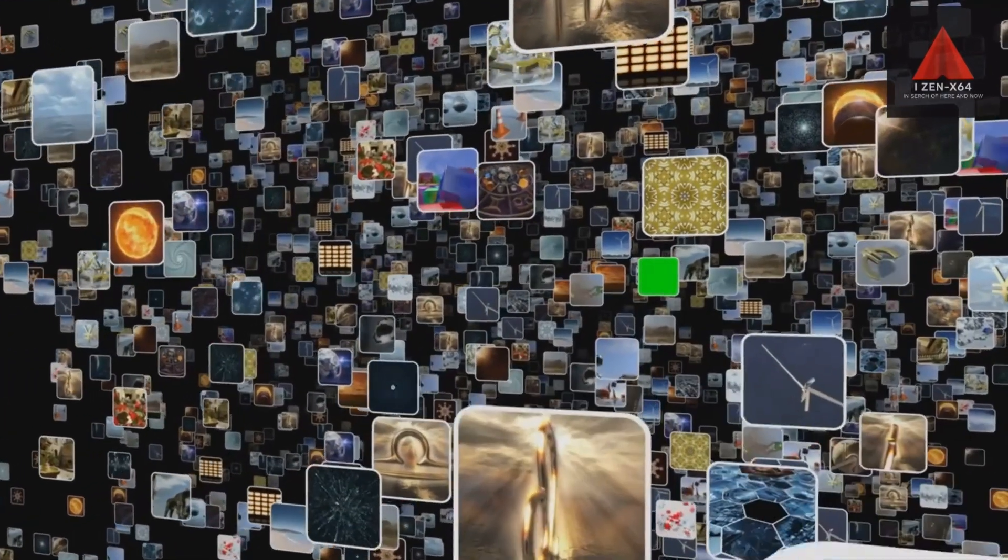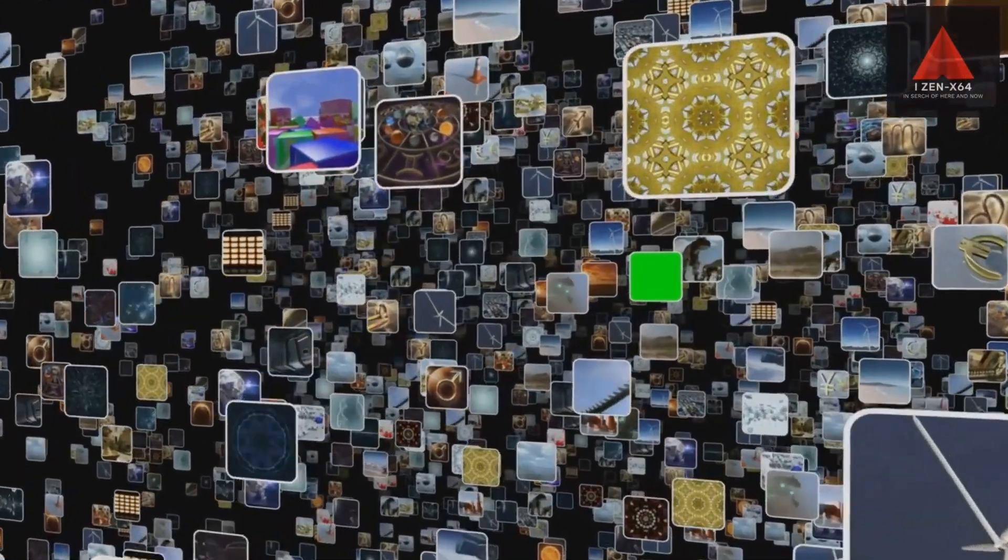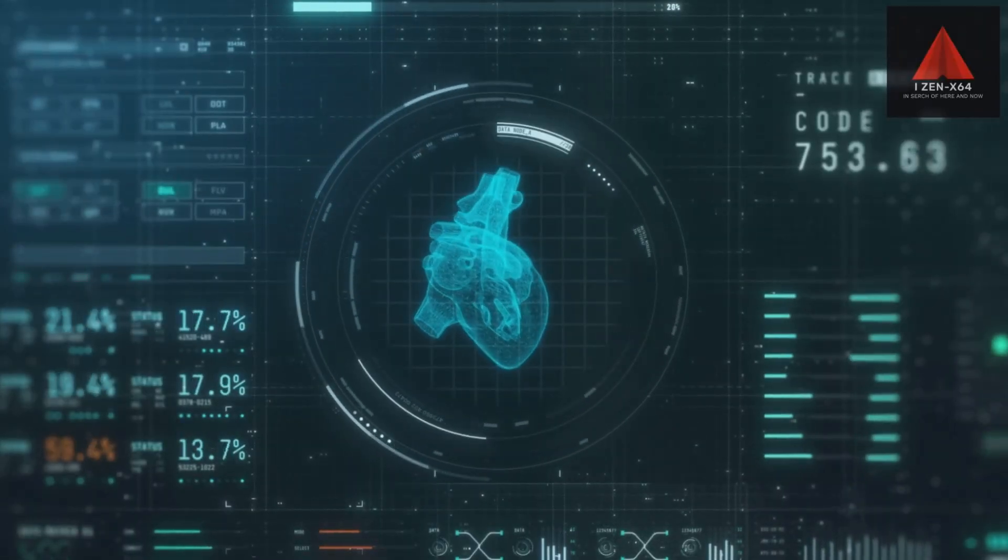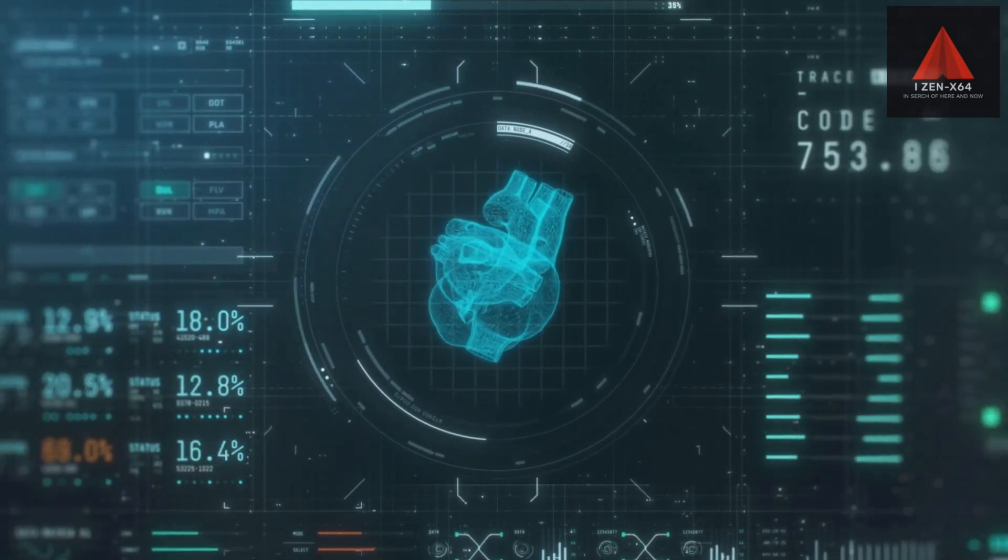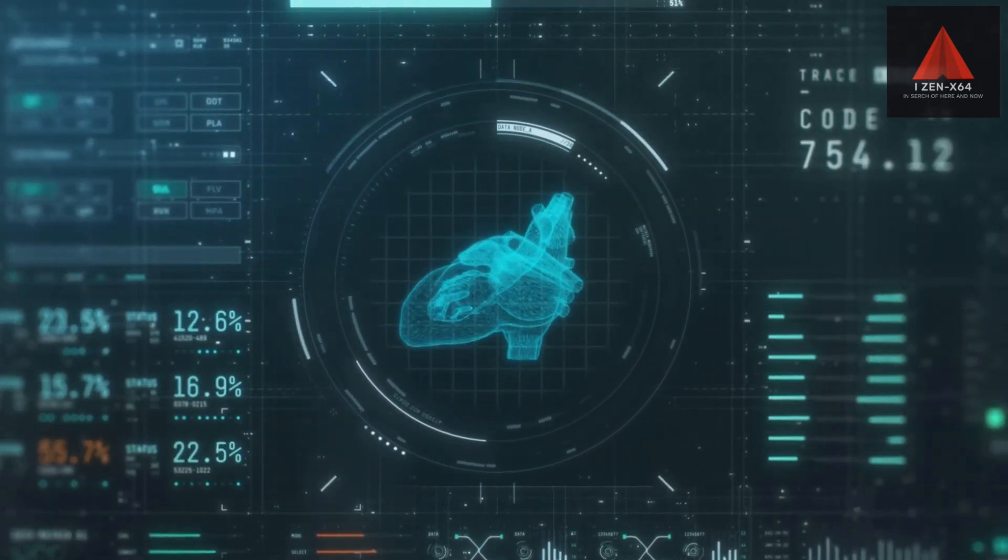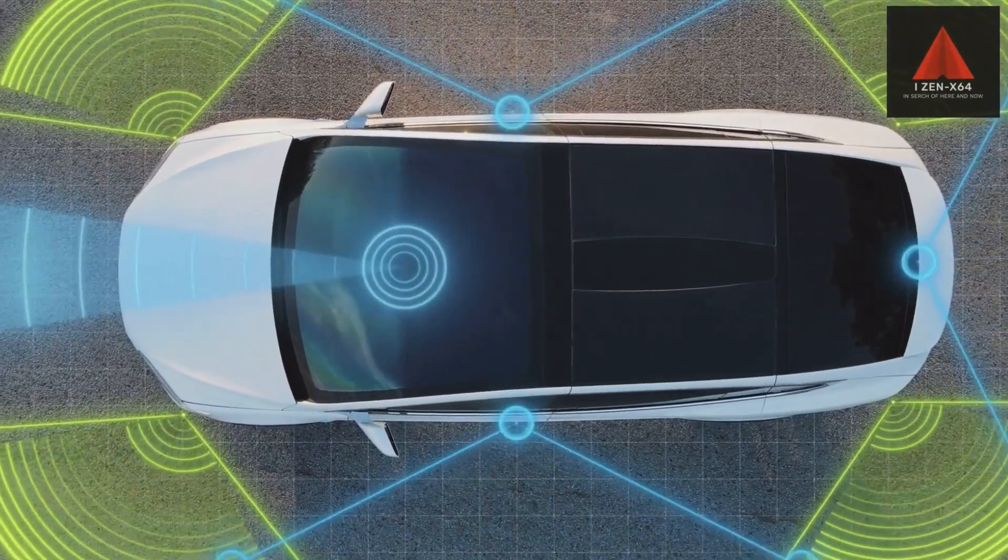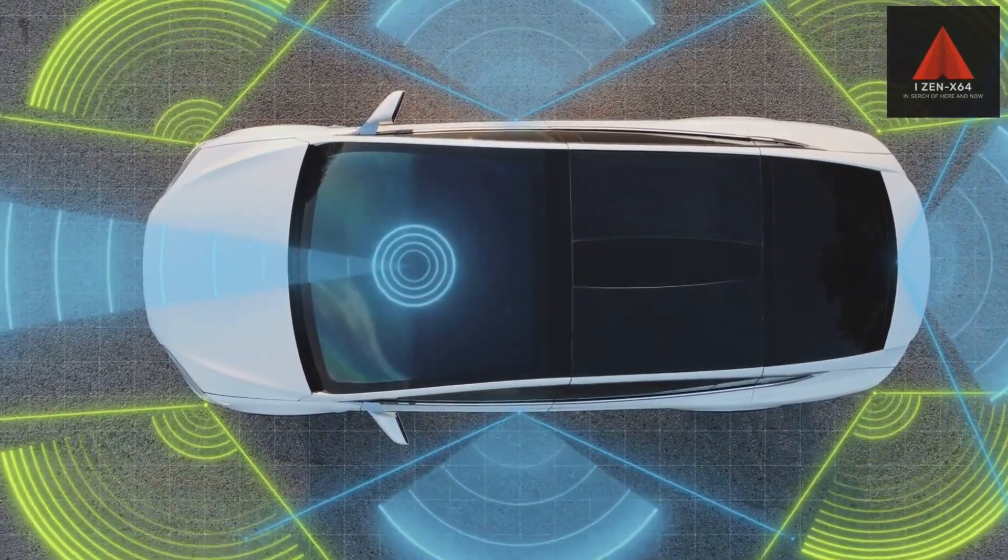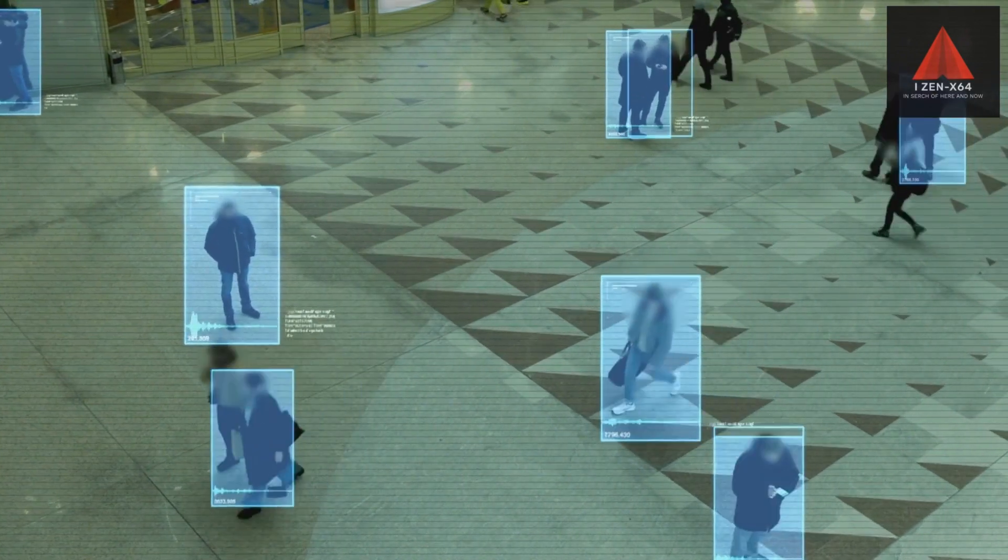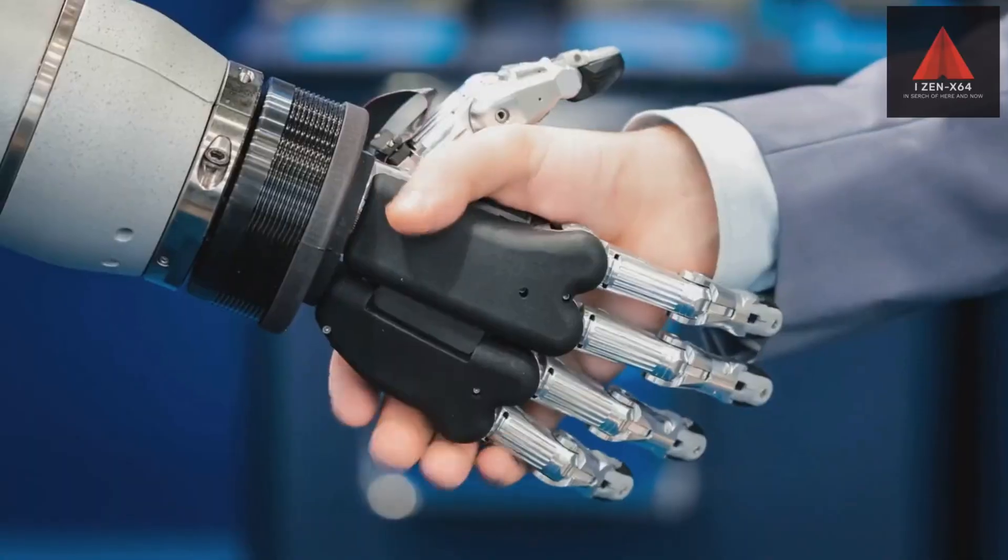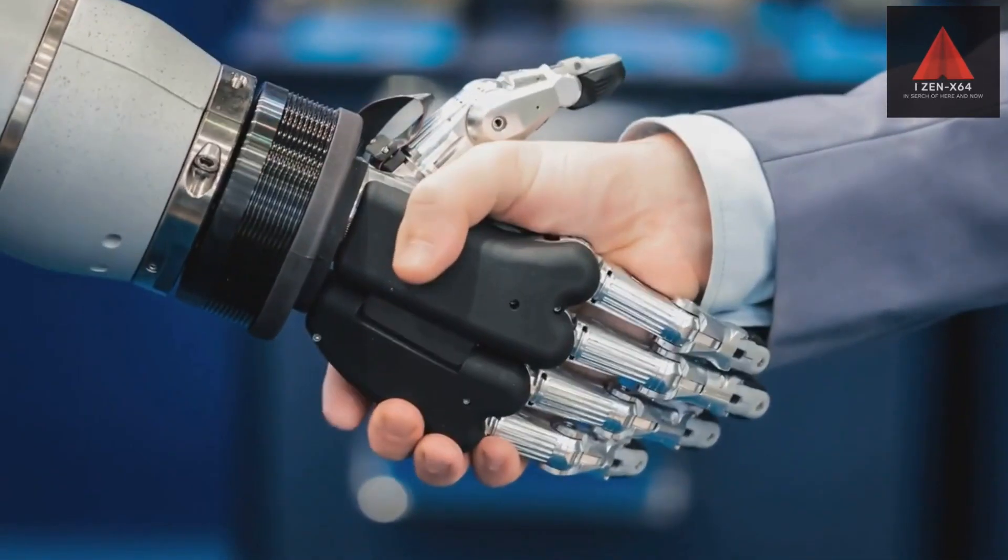Computer vision technology teaches machines to interpret visual information. It's critical for tasks like medical diagnostics, where it aids in precise disease identification, and in self-driving cars for navigation and obstacle detection. Facial recognition technology raises ethical questions, particularly around privacy and surveillance. The technology is advancing robotics,